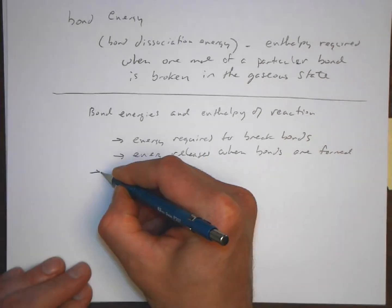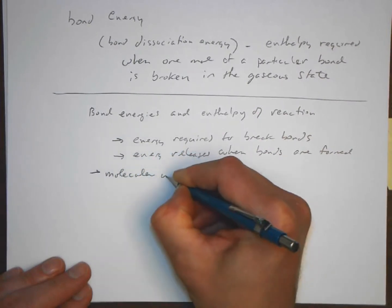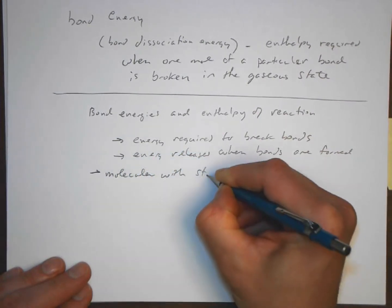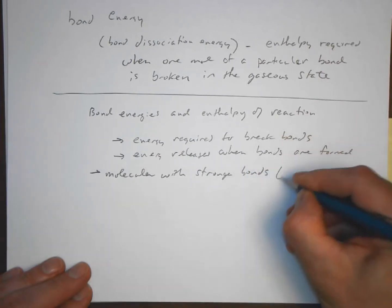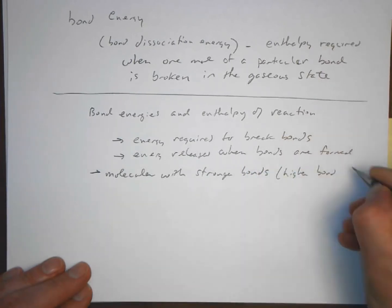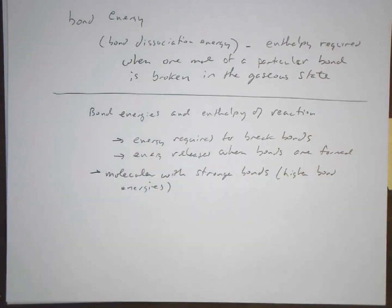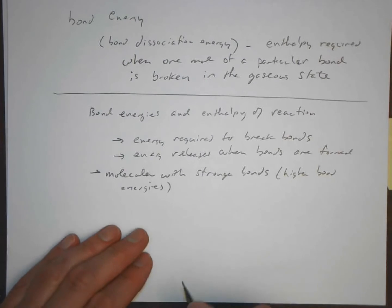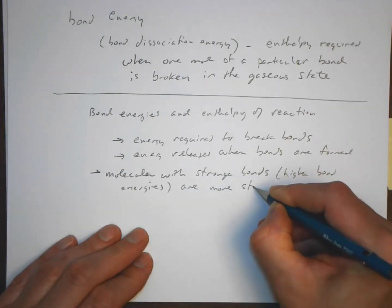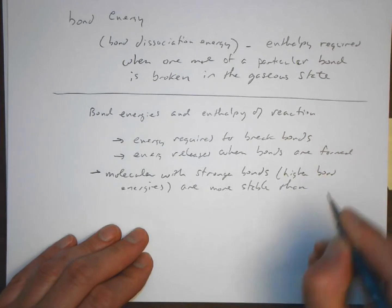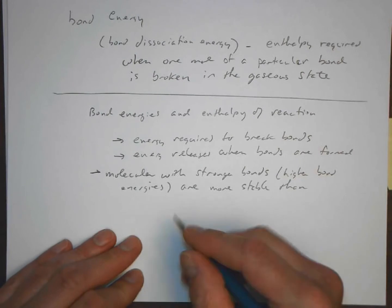Molecules with stronger bonds are more stable than molecules with weaker bonds because of that. So let's look at this: molecules with stronger bonds or higher bond energies, molecules with stronger bonds are more stable than those with weaker bonds.